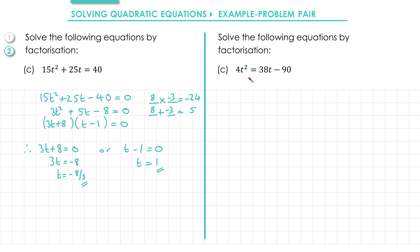First of all I'm going to rearrange to get all three terms on the left hand side. So we get 4t² - 38t + 90 = 0. We have a common factor of 2 in each term so let's divide by 2 to give us 2t² - 19t + 45 = 0.